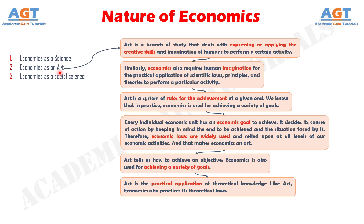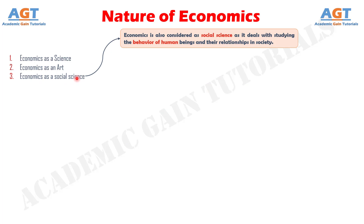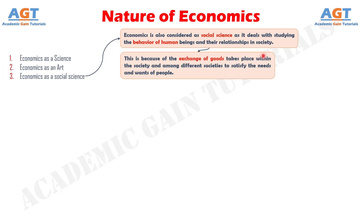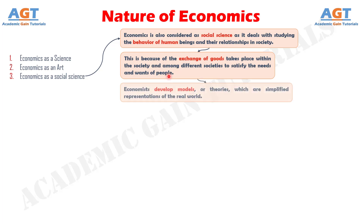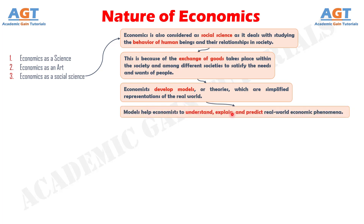Finally, let's talk about the nature of economics as a social science. Economics is considered a social science as it deals with studying the behavior of human beings and their relationships in society. This is because the exchange of goods takes place within the society and among different societies to satisfy the needs and wants of people. So why is economics a social science? Economists develop models or theories, which are simplified representations of the real world. Models help economists to understand, explain, and predict real world economic phenomena.